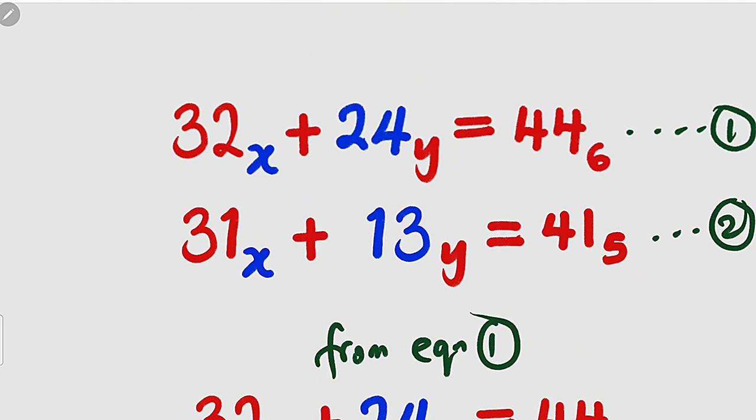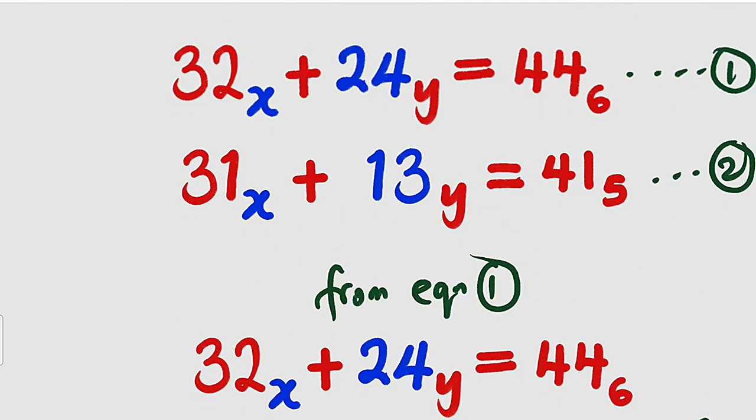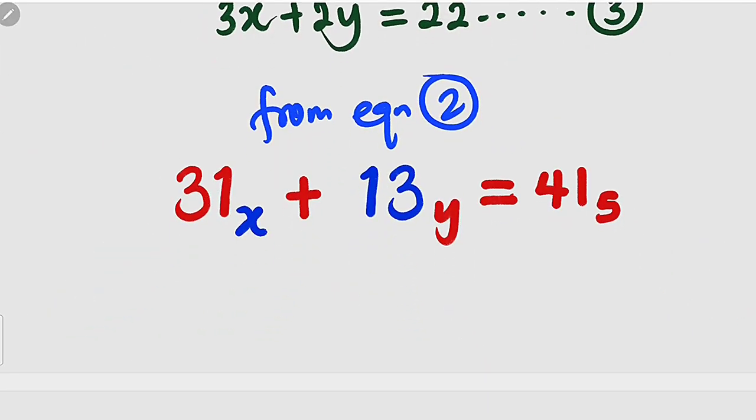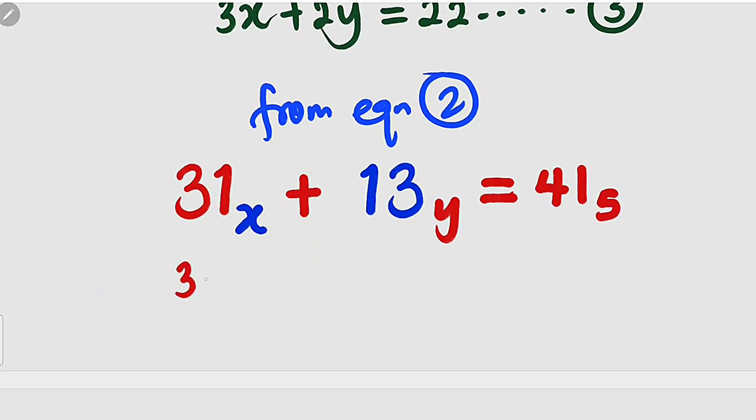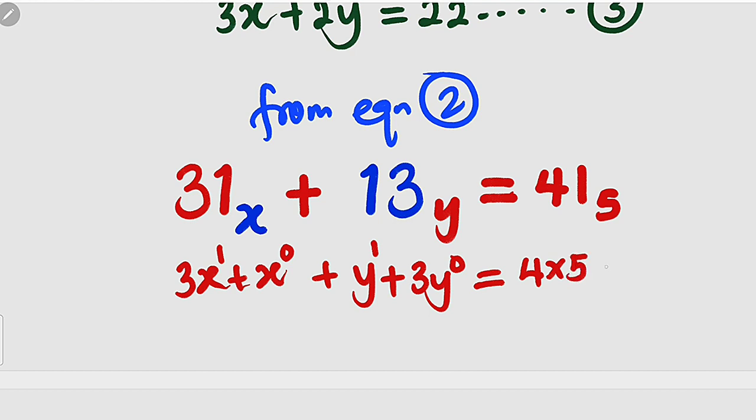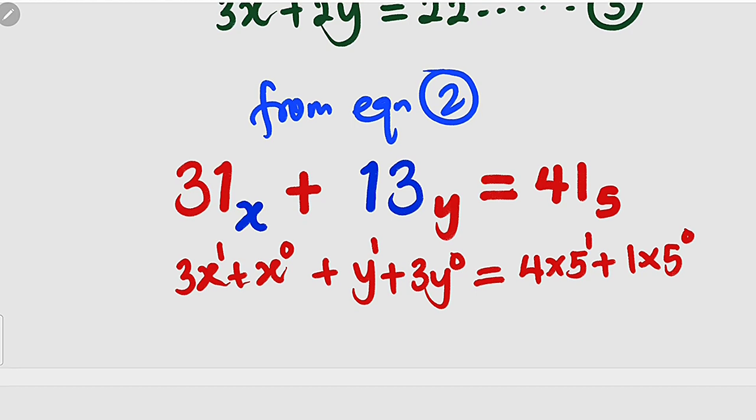Then from equation number 2, we're going to do the same thing. Convert it into base 10. We're going to take 3 here and multiply it by x plus 1 multiplied by x which is just x. Assign index 0, 1. Move to the next. 1 times y is y plus 3 times y is 3y. Assign index 0, 1. Move to the right 4 times 5 plus 1 times 5, indices 0, 1. Simplify.